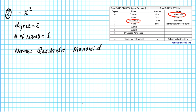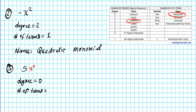Example three: the polynomial 5. The degree of a constant is 0, because there is a hidden x to the power of 0. The number of terms is one. A degree of 0 makes it a constant, and one term makes it a monomial. So the name of the polynomial 5 is a constant monomial.